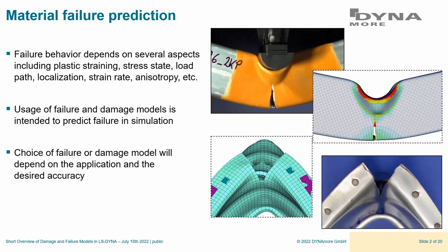The strain path or load path your material undergoes also matters. For instance, if you have tension first and then shear up to fracture, you get a certain plastic strain at failure, but if you reverse that load path, you typically get a different plastic strain at failure. Under tensile stress states, ductile materials experience localization — necking or thinning — before failure. Strain rate and anisotropic behavior also play a role.